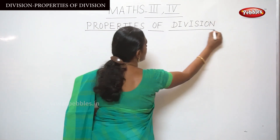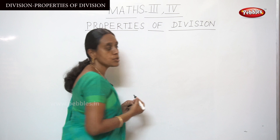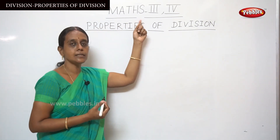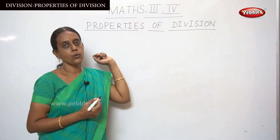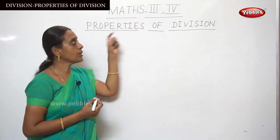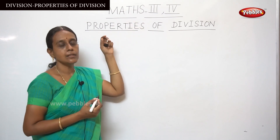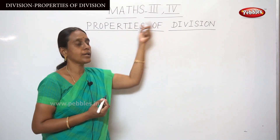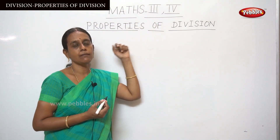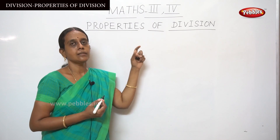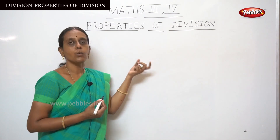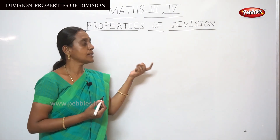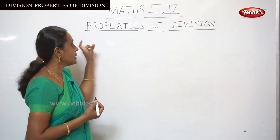These properties of division are for your grade level, that is third and fourth. In grade three the numbers will be small numbers, and in grade four the numbers will be more than four digits, that is five-digit numbers.